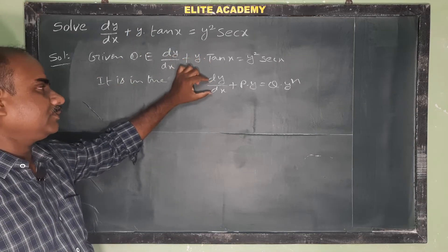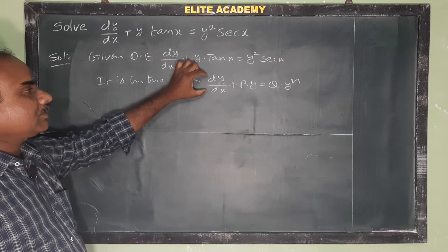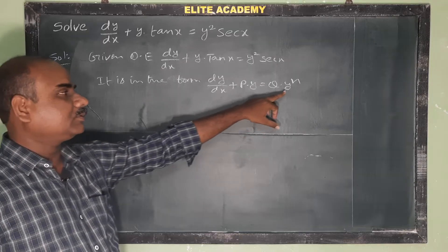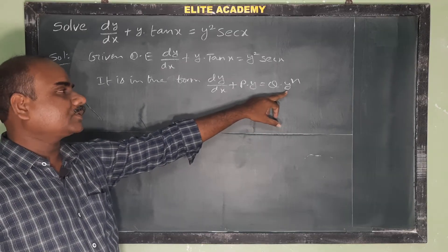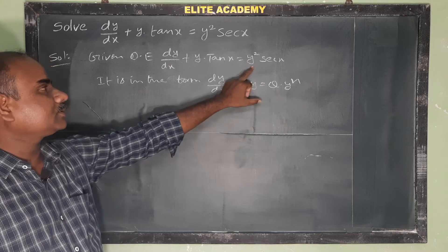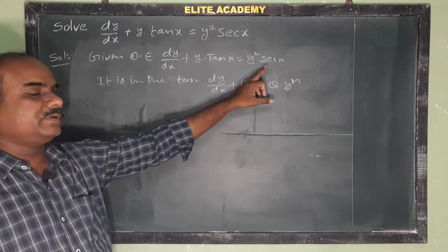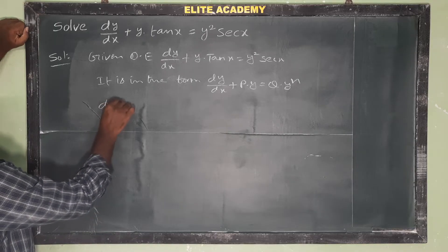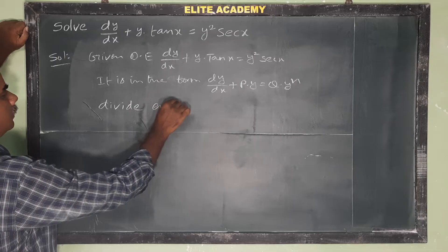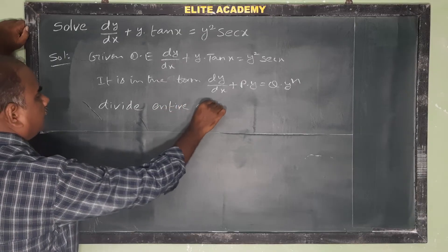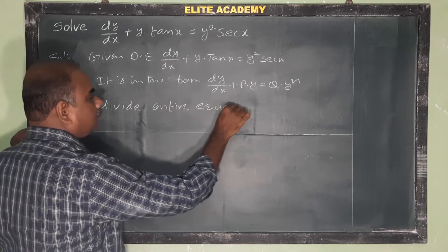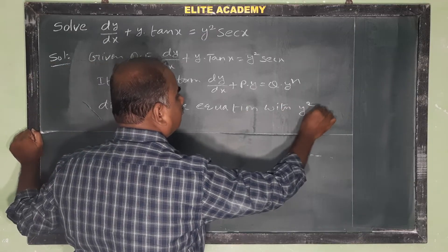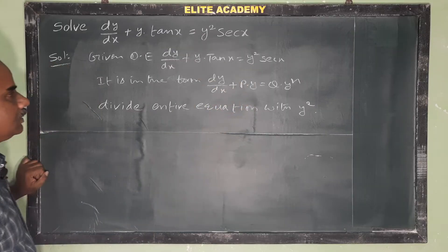Bernoulli equation in terms of y. To convert to a linear differential equation (LDE), divide the entire equation by y^n, that is y². Divide the entire equation with y².